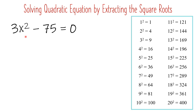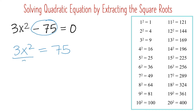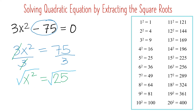How about this one: 3x squared minus 75 equals 0. Separate negative 75 — write 3x squared on this side, then transpose negative 75 so it becomes positive 75 on the other side. Remove the numerical coefficient by dividing both sides by 3. Cancel 3, so we only have x squared on this side. Then divide 75 by 3, which gives 25. Extract the square root: the square root of x squared cancels the radical and exponent, leaving just x. The square root of 25 comes from 5 times 5, so the answer is positive and negative 5.